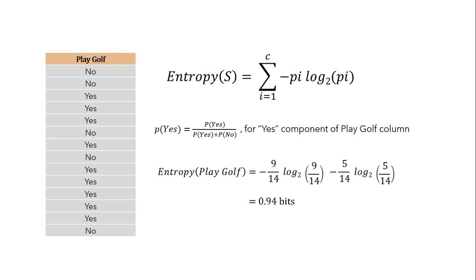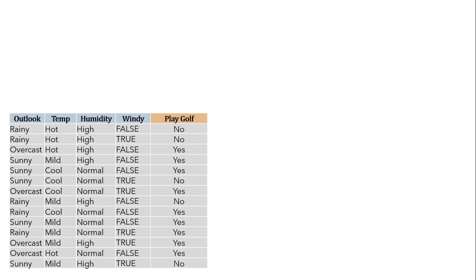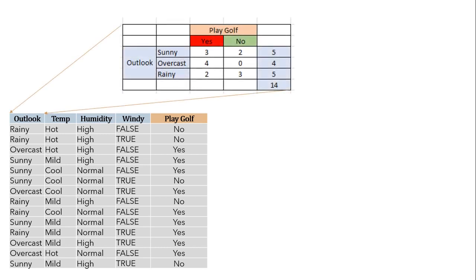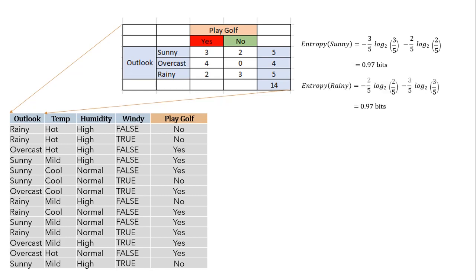Once we have the entropy of the target variable, we will find the entropy for each column with respect to the target variable to find the most homogeneous sample. Extracting the outlook column: sunny has 3 yes and 2 no, overcast has 4 yes and 0 no, and rainy has 2 yes and 3 no. Entropy of sunny: (3/5)·log(3/5) − (2/5)·log(2/5) = 0.971. Similarly, entropy for rainy is 0.971 and for overcast is 0.